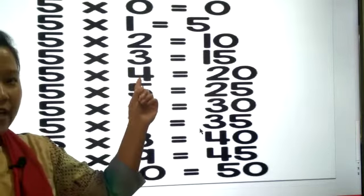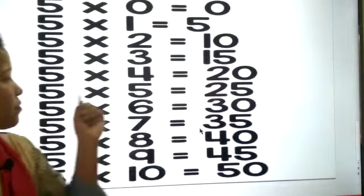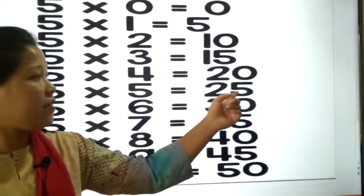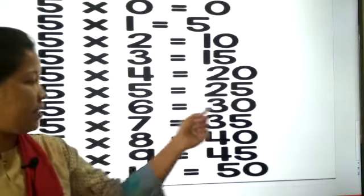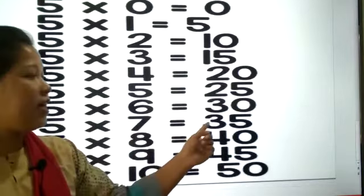5 4s are 20, 5 5s are 25, 5 6s are 30, 5 7s are 35.